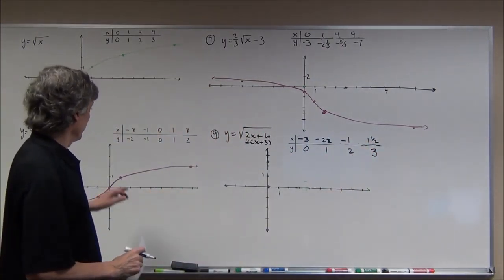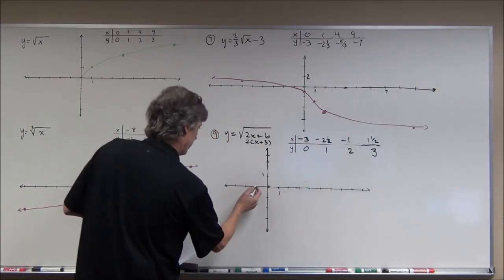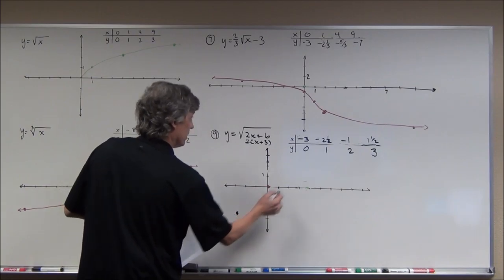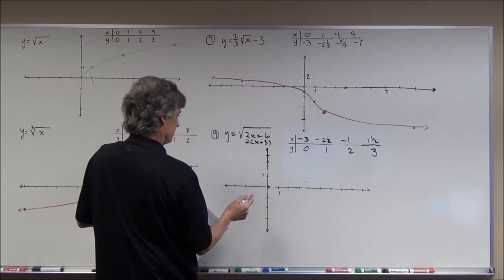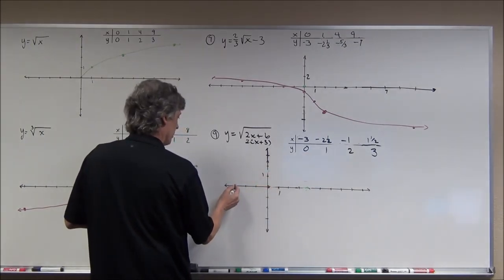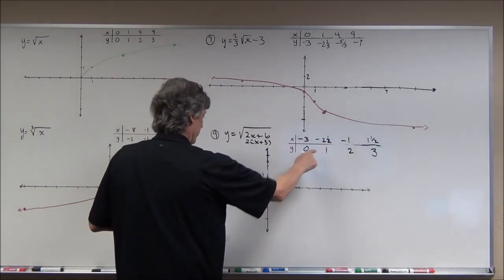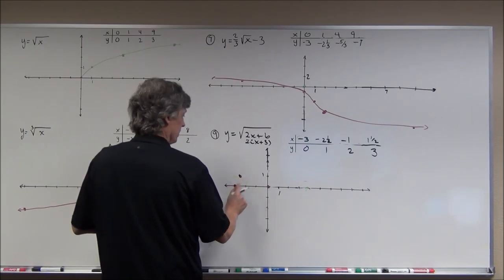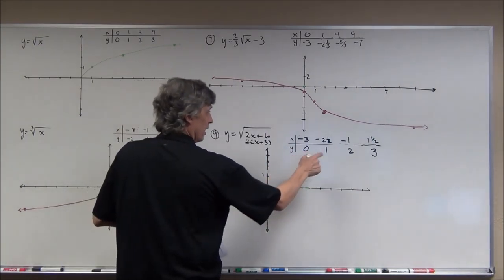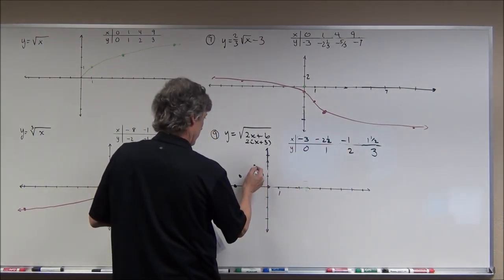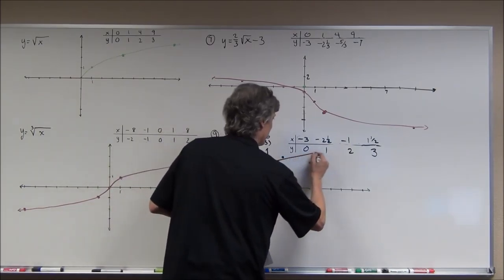These four points should give a good idea of the shape. Plotting: (−3, 0), (−2.5, 1), (−1, 2), and (1.5, 3). See how much further it opens up horizontally? Because it's been squished in horizontally, it has the effect of being stretched out — the graph starts at (−3, 0) and opens to the right.